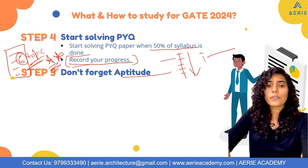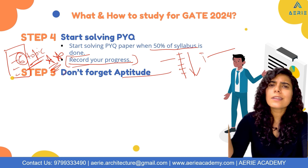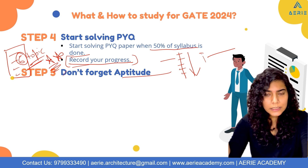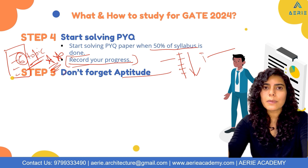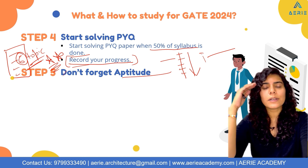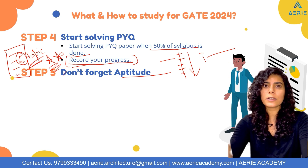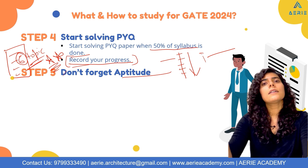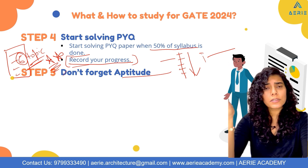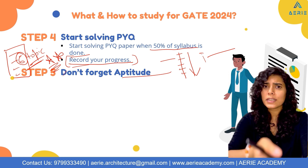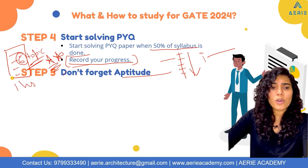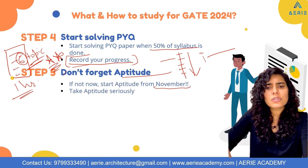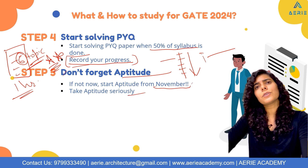Don't forget aptitude. So many students skip aptitude while preparing for GATE Architecture. Architecture students are often weak in maths and numericals, so start working on this right now. For aptitude, the questions in GATE are very basic. Spend one hour on it religiously every day if you're very weak. If you're okay with it, at least start from November.